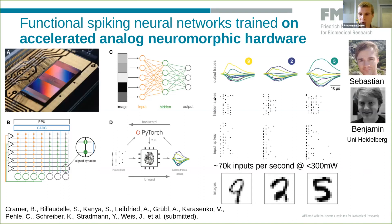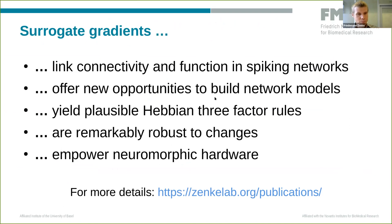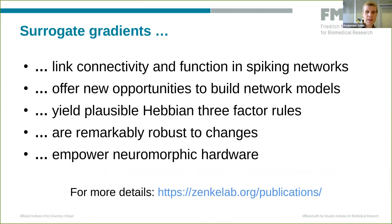To wrap up: surrogate gradients can link connectivity and function in spiking neural networks. They offer new opportunities to build network models in computational neuroscience that yield plausible Hebbian three-factor learning rules. They are remarkably robust, and they empower neuromorphic hardware.